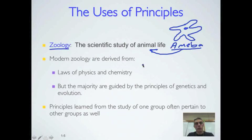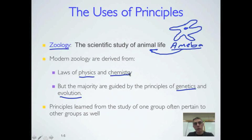Modern zoology is derived from basically four things: we have physics, we have chemistry, we have genetics, and we also have evolution. Genetics and evolution most people understand do belong in the area of zoology. We have to look at those to make a good understanding of the different phyla that we might study.